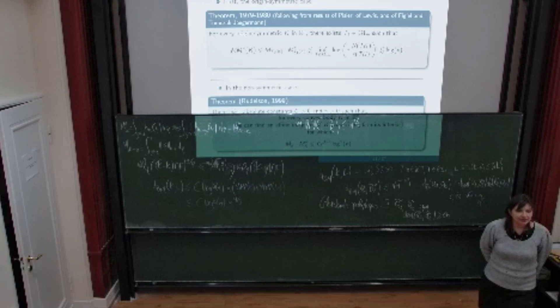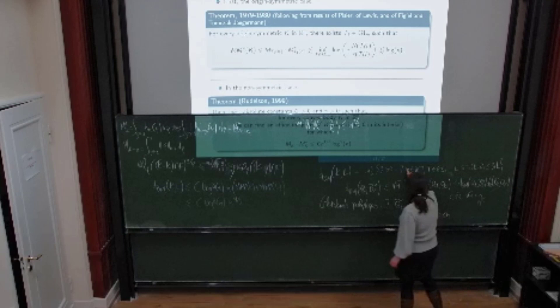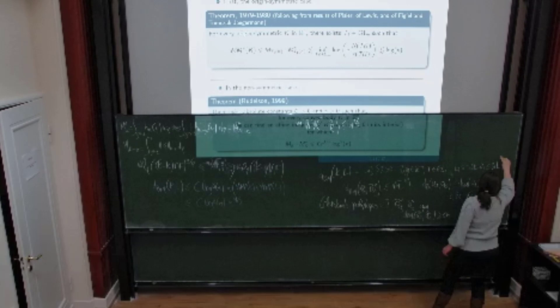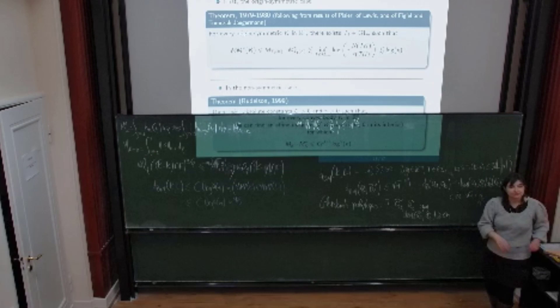Thank you for your talk. Are there any questions? [Audience member clarifying definition.] The Banach-Mazur distance definition involves: there exist x and T such that L - y ⊆ T(K - x) ⊆ lambda·(L - y).